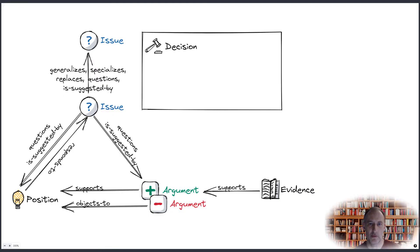Dialogue and argument mapping using issue-based information systems, or IBIS in short, is an example of concept mapping. This method is presented in detail in Visualizing Argumentation published in 2003.